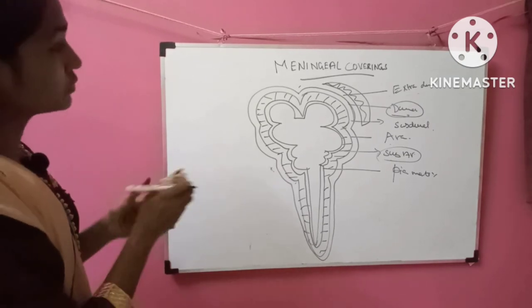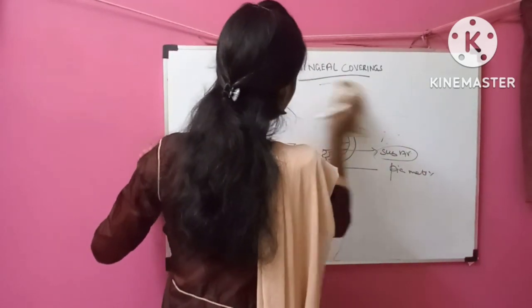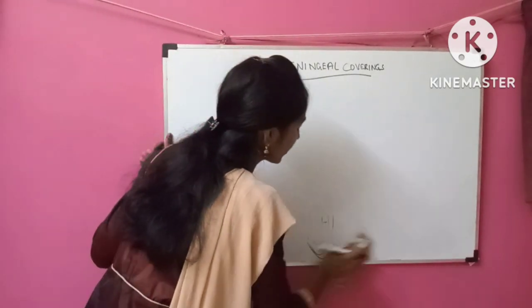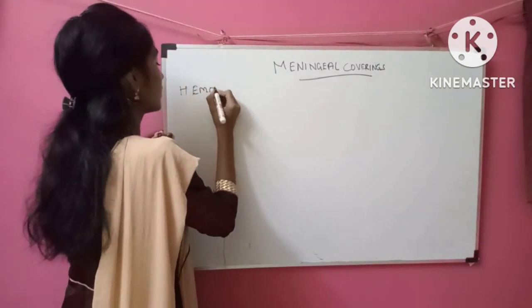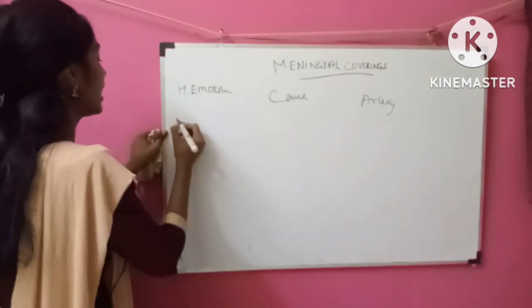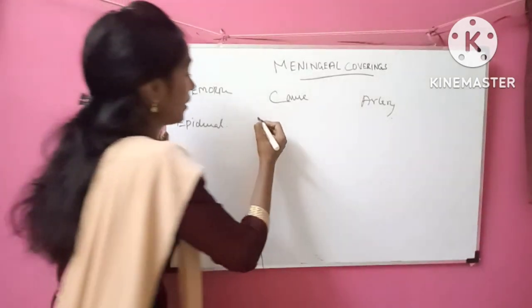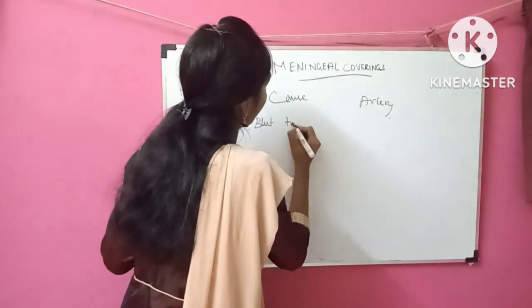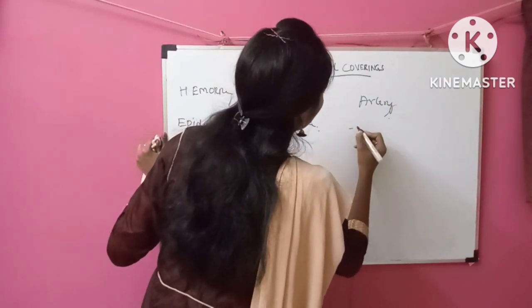Now I am going to tell you the difference between extradural and epidural hemorrhage, and what are the causes and which artery is involved. First, epidural or extradural hemorrhage — it is caused by any blunt trauma, usually in the temporal region. The artery involved is the meningeal artery.